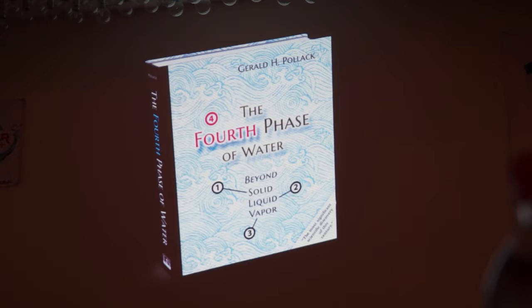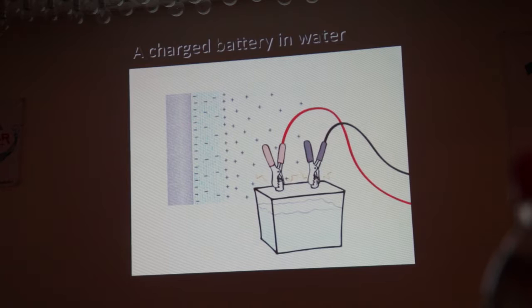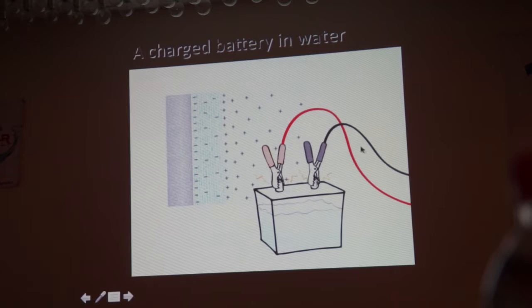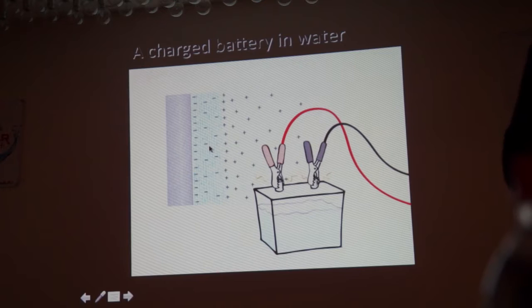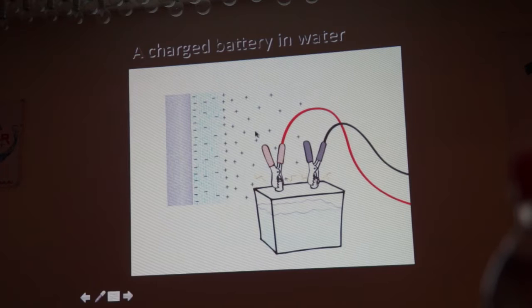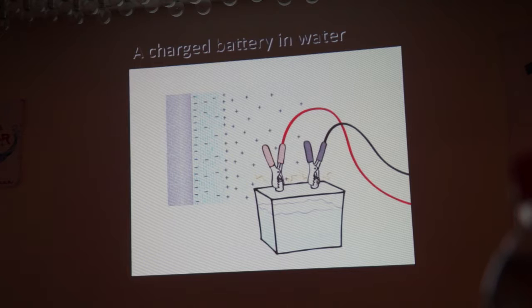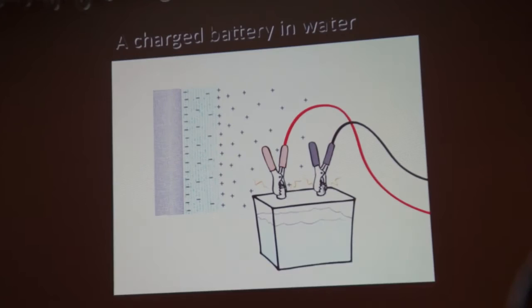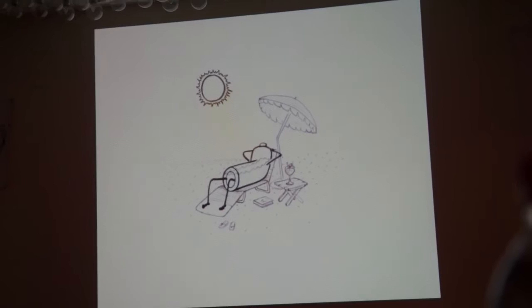It kind of all starts with this book, which I know some of you know about. The essence of the book is about EZ water and the splitting of water into negative and positive components. The idea is that you have some kind of surface - a hydrophilic surface - and the water immediately adjacent to it turns negative; that's EZ water. Then you have positive charges, and it's kind of like a battery. That battery will be relevant in what I have to say about the earth.